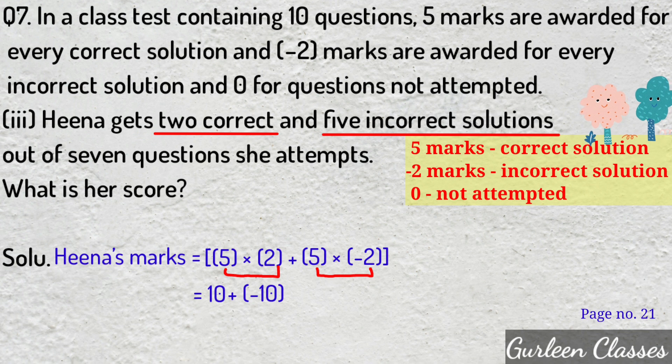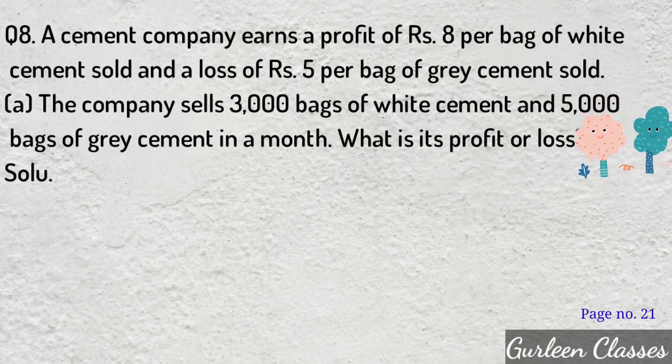Part 3 — solving gives 10 minus 10 equals 0. So Heena's marks are 0.